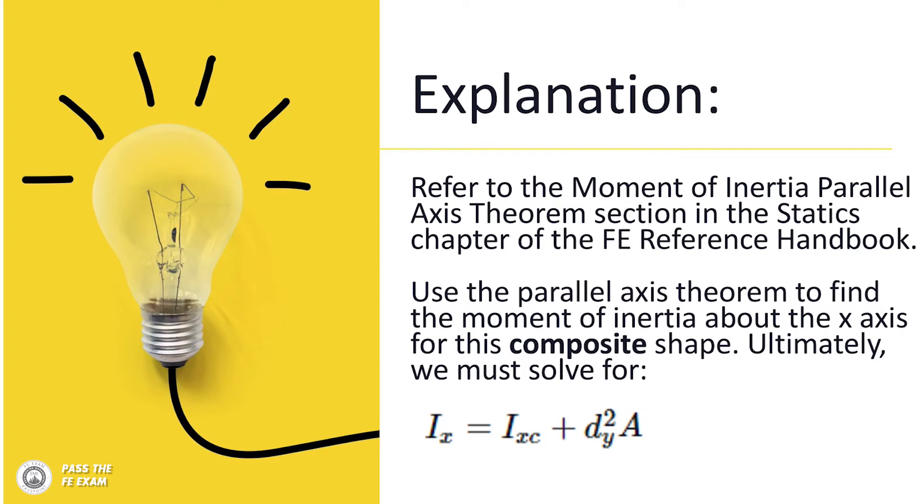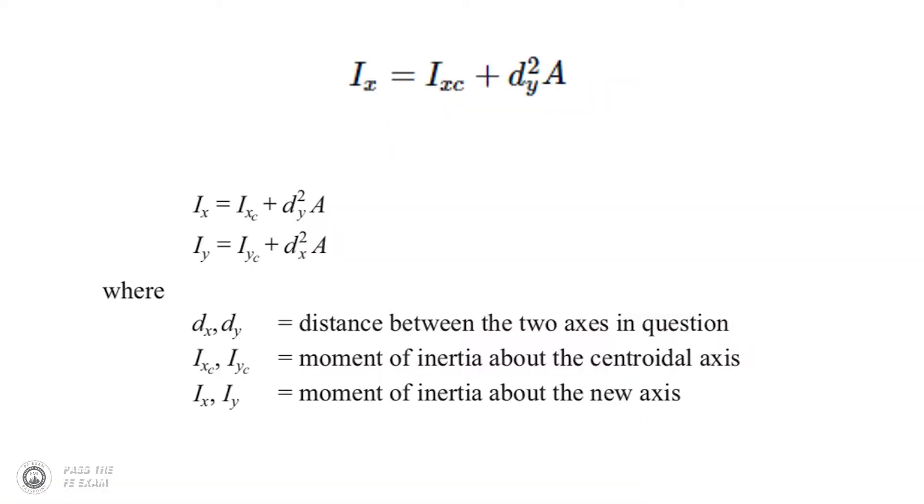Ultimately you're going to have to solve the equation below. But let's dive into it in some more detail here and let's define the equation. Here you can see the terms of the equation laid out. The d is the distance between the two axes in question. The IXC or IYC is the moment of inertia about that centroidal axis and then IYC is the moment of inertia about the new axis.